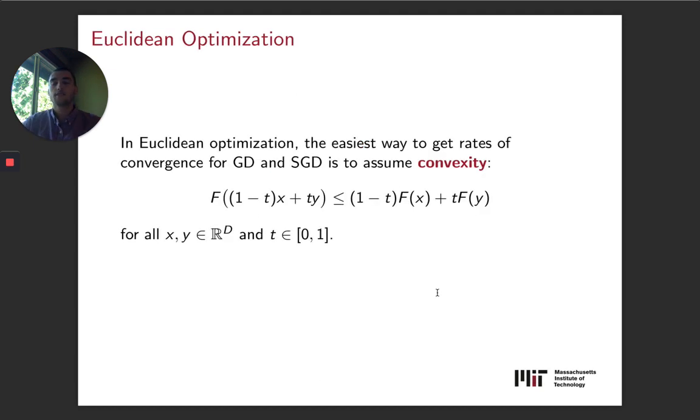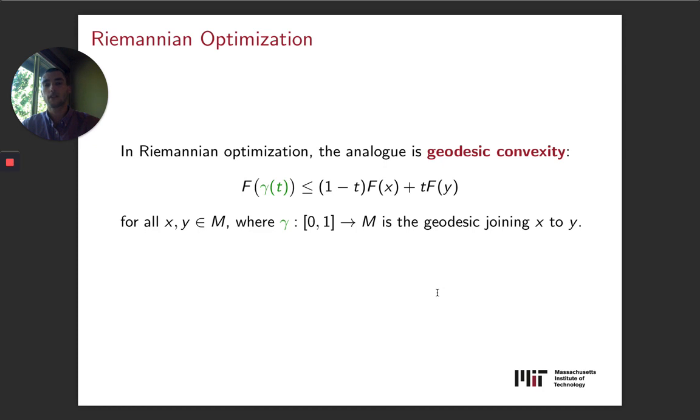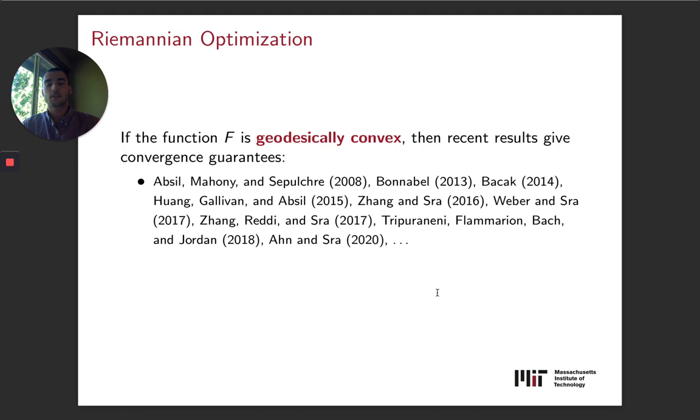If we want to analyze these methods, then we would like to go to something that we know how to analyze, which is some objects in Euclidean optimization. The typical assumption that we would want to use there is convexity. In our case, actually, we're going to be looking more at something called geodesic convexity because of the fact that there's some non-trivial geometry happening. So we look at Riemannian optimization, where geodesic convexity is defined quite analogously to Euclidean convexity.